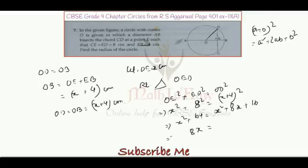8x equals to 64 minus 16, which will give you 48. So that means x equals to 48 divided by 8, which will give you 6. So we are getting OE as 6 centimeter.